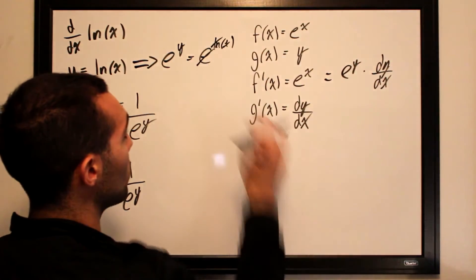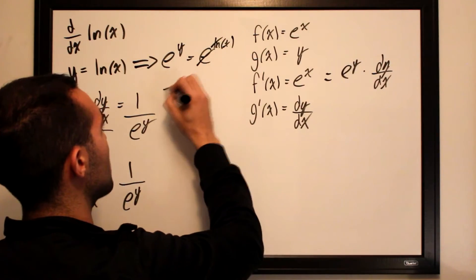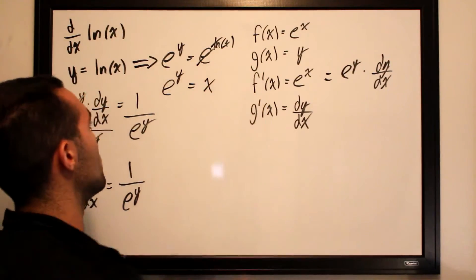Once again, these will cancel each other out. All we will have is x left on this side. Therefore, e to the y will be equal to x. So we can substitute that in right over here.